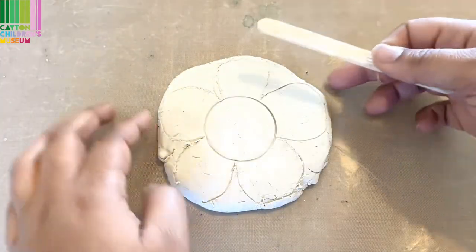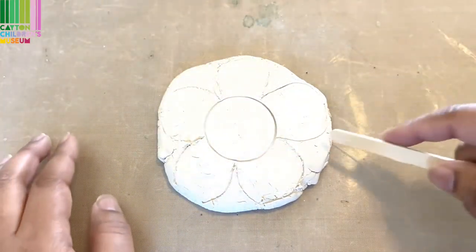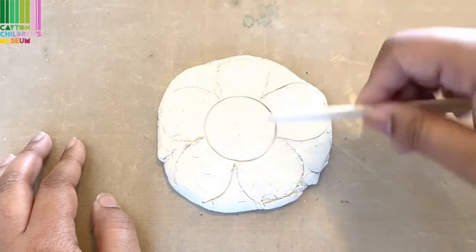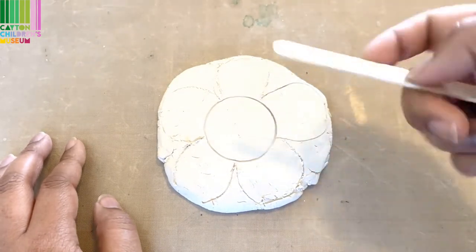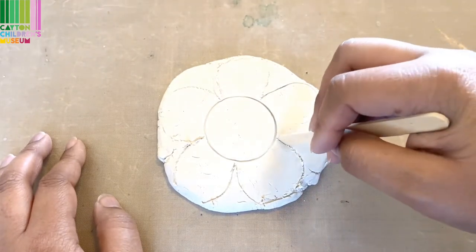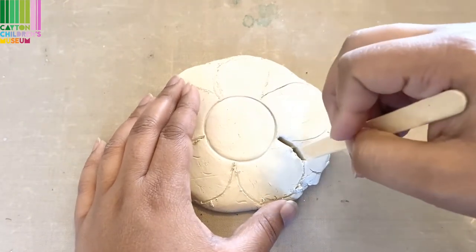Now that I've gotten my flower shape kind of cut out, I'm going to go ahead, take my whatever I'm using to cut with. So my popsicle stick. And I'm just going to start to slowly cut that shape out.